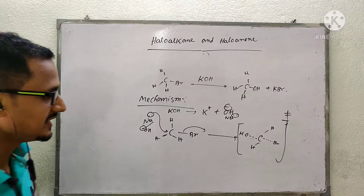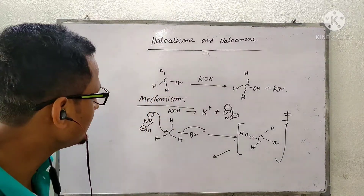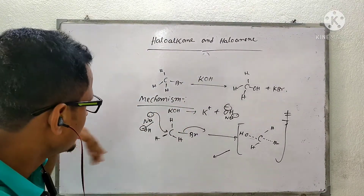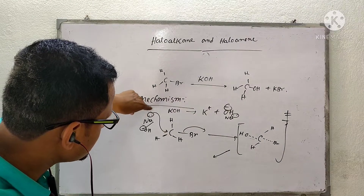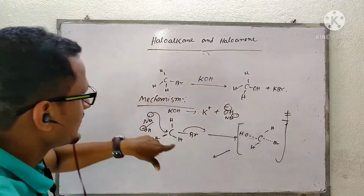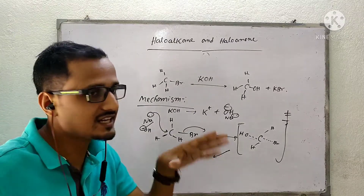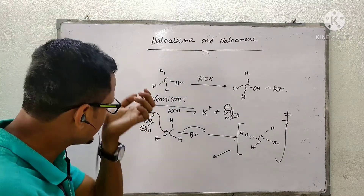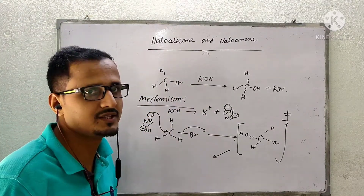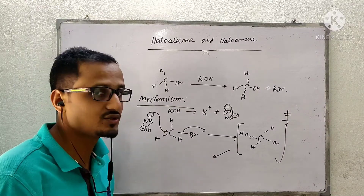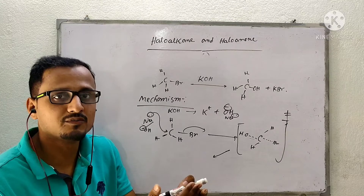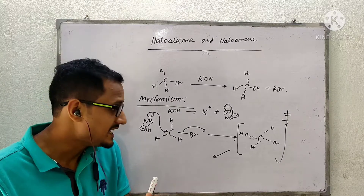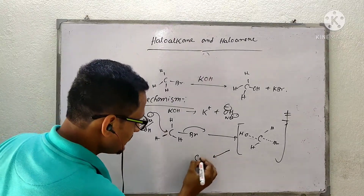In the transition state, the carbon is half-bonded with the incoming nucleophile and the bromide is partially released. After the transition state, the nucleophile is fully attached and bromide has left. The attack from the opposite side means you get exactly the opposite configuration compared to the starting methyl bromide — complete inversion of configuration.